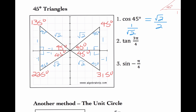Tangent of 3 pi over 4 — I'm going to multiply by 180 over pi. I also know that's 3 fourths of a semicircle, and I end up getting 135. So I'm going off my reference angle, opposite over adjacent. 1 over negative 1 is going to be negative 1.